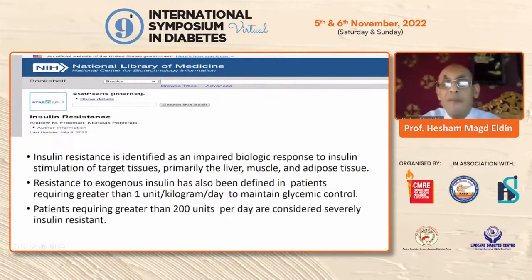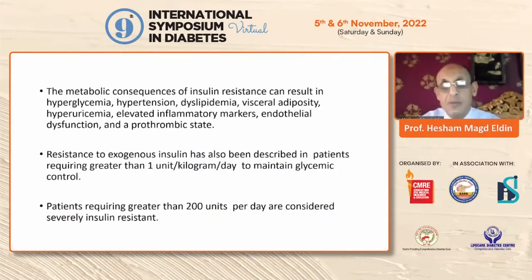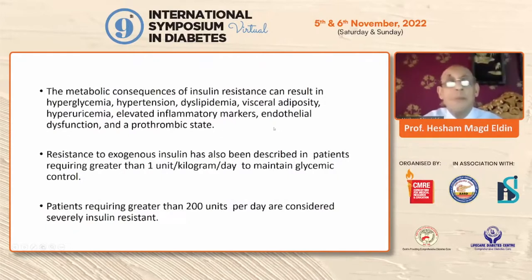For those requiring more than 200 units of exogenous insulin, they have severe insulin resistance. The metabolic consequences of insulin resistance result in many problems, including hyperglycemia, hypertension, dysglycemia, and visceral adiposity.